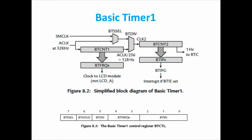Today we are going to see Basic Timer 1. The block diagram of Basic Timer 1 consists of two counters: BTCNT1 and BTCNT2. Each counter is 8 bits. In the watchdog timer we saw a 16-bit counter, but in Basic Timer 1 we have two 8-bit counters. I can use the counters individually or in a cascaded fashion. For BTCNT1, the clock source is the ACLK — most of the time ACLK will be 32 kHz.